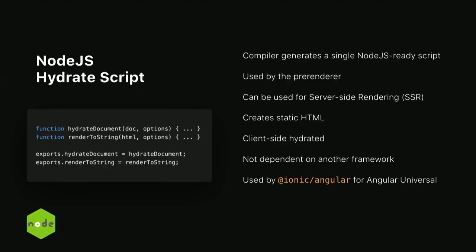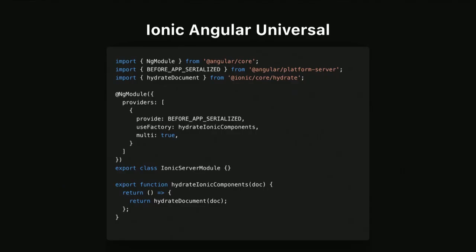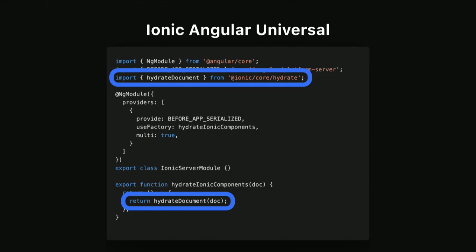Next is the server side of components. We're able to build a single file with just two exported functions built for a Node.js environment. What's unique is that while Stencil generated this file, it's not a dependency — it actually doesn't have any require statements inside of it. So this makes it even easier to run functions from any Node.js script. This is actually how Ionic components are able to be server-side rendered by Angular Universal. Internally, this is the Ionic server module, importing the generated Hydrate script that we created. This is also something we're planning to do with Next.js and Gatsby.